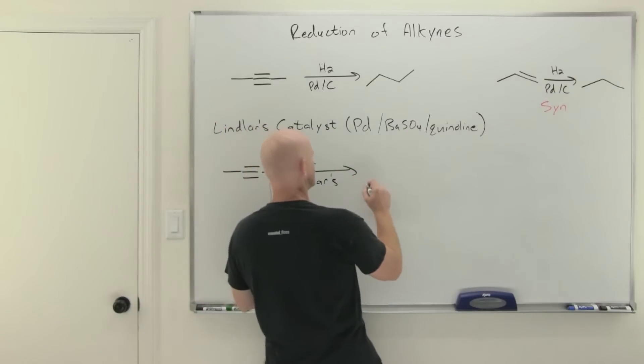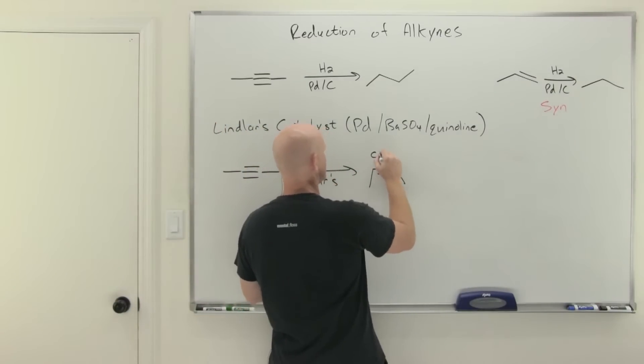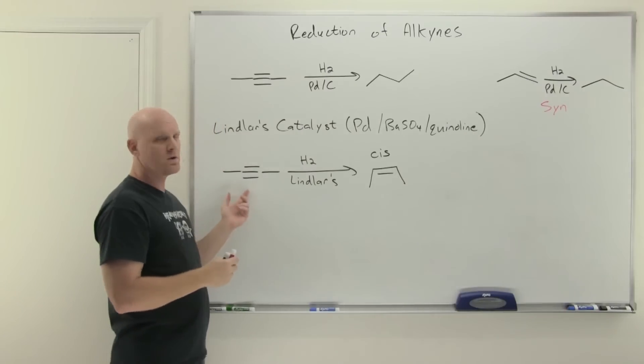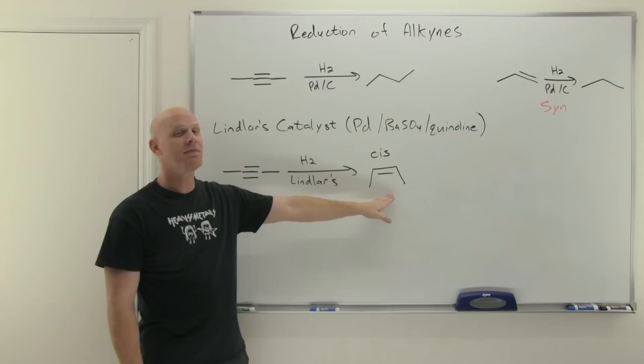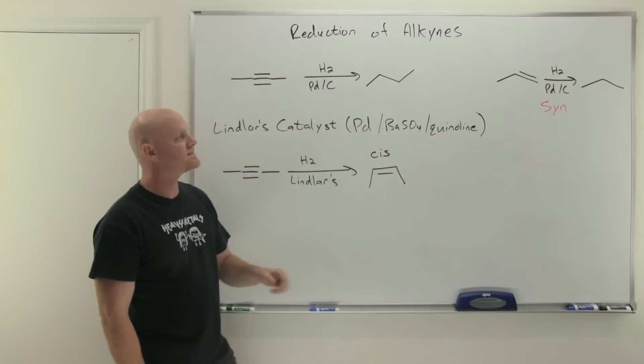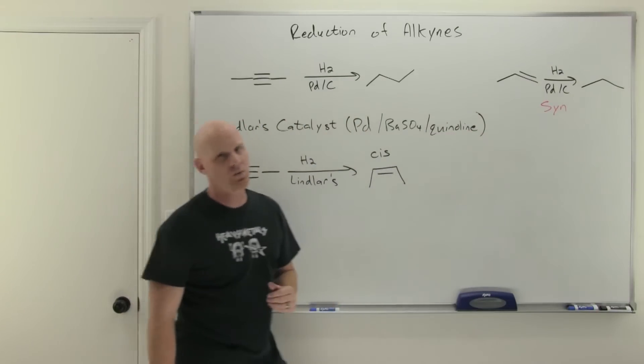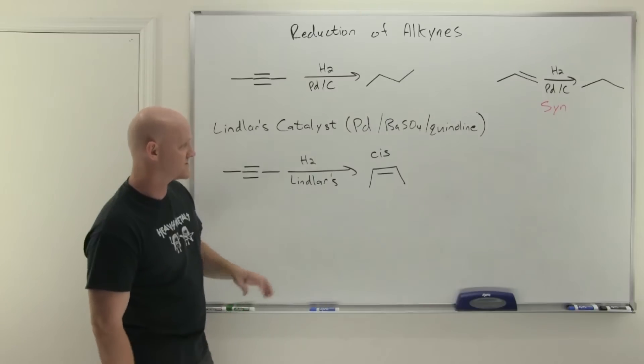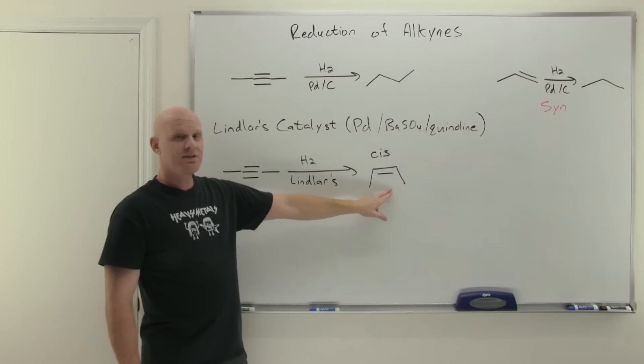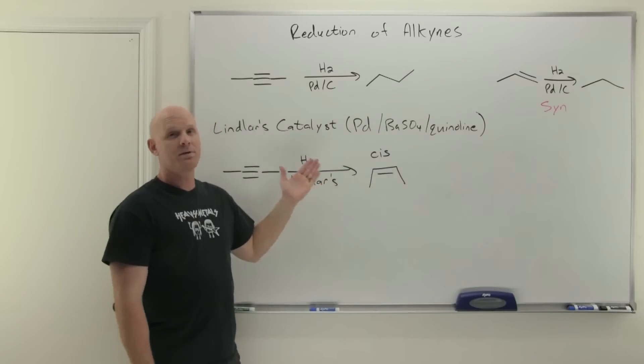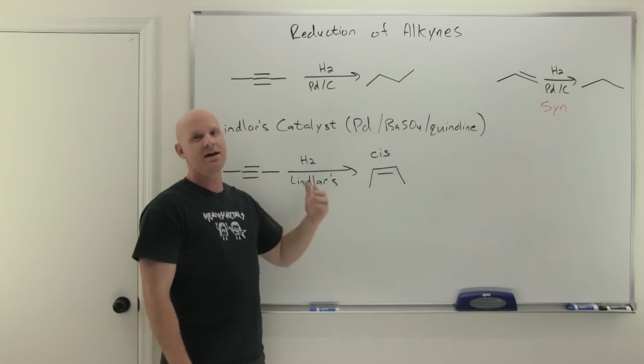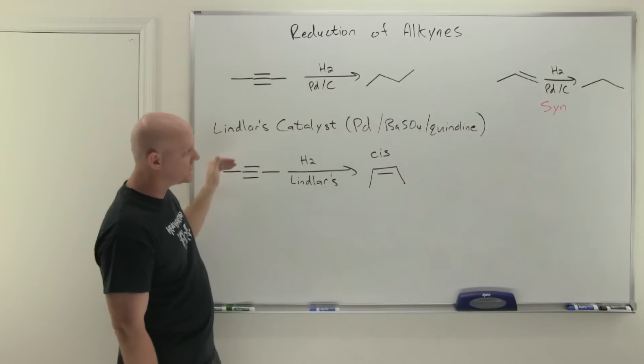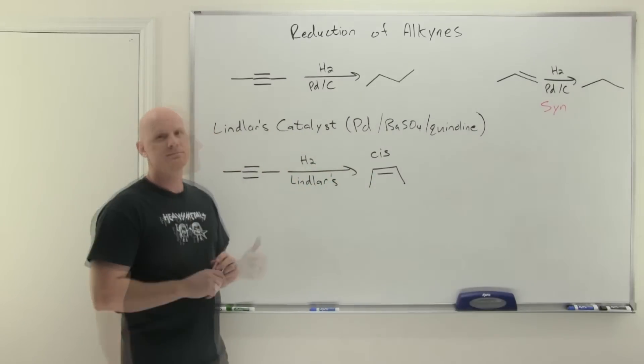This reduces it to a cis alkene if it matters. If I start with a terminal alkyne it wouldn't have mattered, but with an internal alkyne you're going to get the cis alkene, not the trans, because once again this is a syn addition just like it was for alkenes. We get this lovely cis alkene and then it stops because the Lindlar's catalyst is not reactive enough to react with the alkene once it forms.